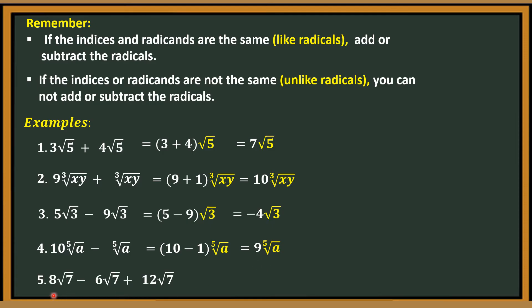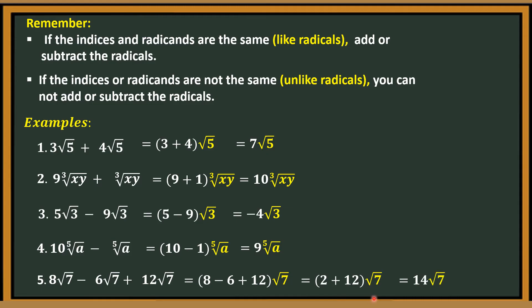Number 5: 8 square root of 7 minus 6 square root of 7 plus 12 square root of 7. They have the same index and the same radicand. Therefore, we can combine them. That is 8 minus 6 plus 12, copy square root of 7. 8 minus 6 is 2, plus 12 gives us 14. The answer is 14 square root of 7.